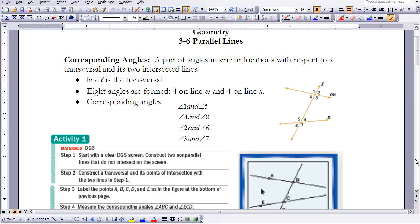First of all, in order to talk about corresponding angles, we need three lines. We need two lines with another line going through it. So here I have line M and N, and I have line L intersecting both of those. Line L is what we call a transversal. And when we do that, we get four angles forming between each of those intersecting lines.